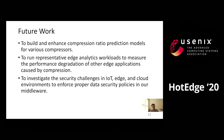This work is far from complete. We plan to extend our current work in the following directions. First, we plan to build and enhance compression ratio prediction models for different compressors — we believe this is the key and core of our work. Second, we plan to run representative edge workloads to measure the performance degradation of applications caused by compression, and may propose solutions to mitigate this impact. Third, we plan to investigate security challenges in IoT, edge, and cloud environments to enforce proper data security policies in our middleware. When we designed the ZipMate API, we reserved a parameter to allow users to specify encryption of data at the client site before it is sent to the cloud.